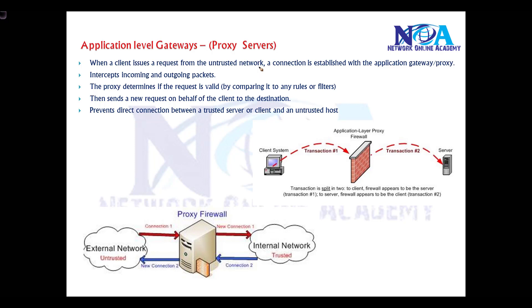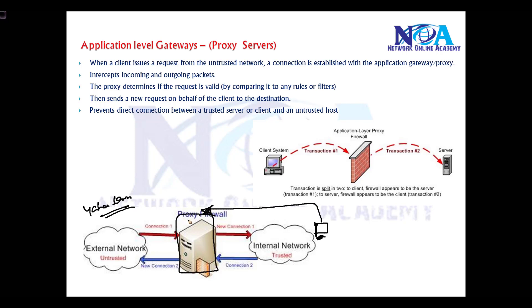Let's say there is a user on my internal network trying to access something on the internet — maybe a Yahoo server. The request goes to the proxy. We maintain application level gateways or proxy servers, and the request is initiated from source address 10.1.1.1, destined to the Yahoo server, and it actually goes to the proxy server.